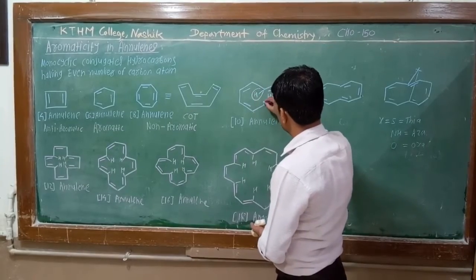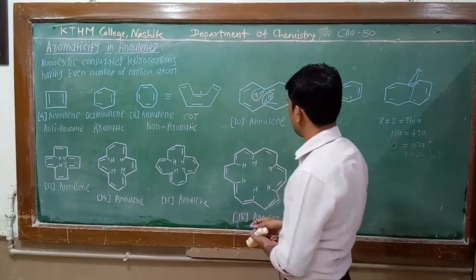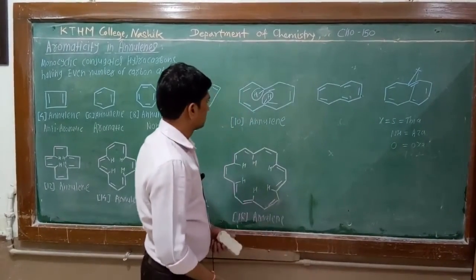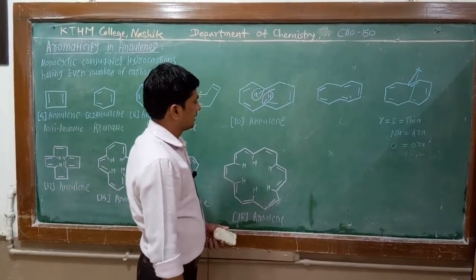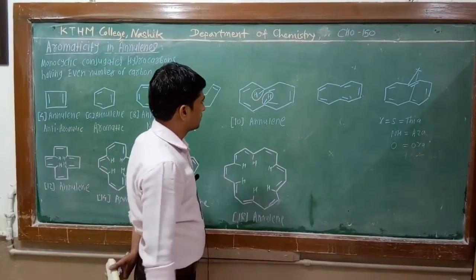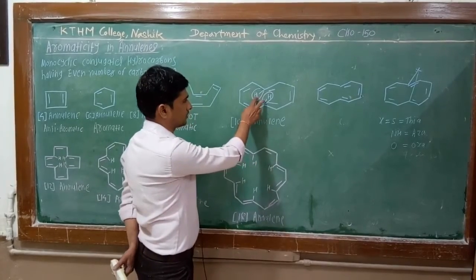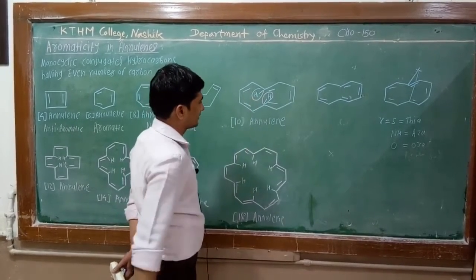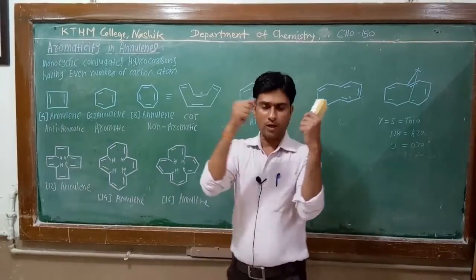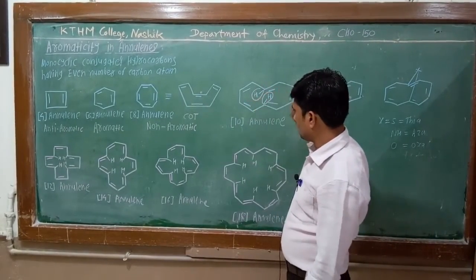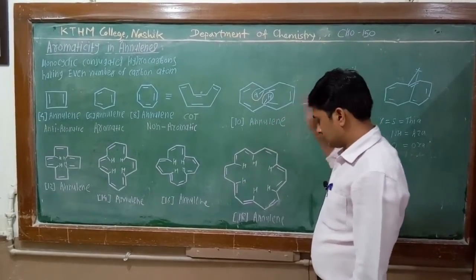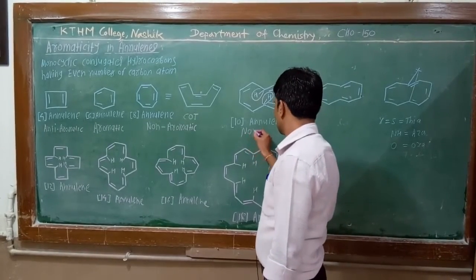This type of hydrogen atom is known as intraannular hydrogen. These intraannular hydrogen atoms are close to each other and therefore produce steric hindrance. They tend to go apart from each other and therefore this ring is not planar. This is a non-planar ring, and due to this reason 10-annulin is non-aromatic.